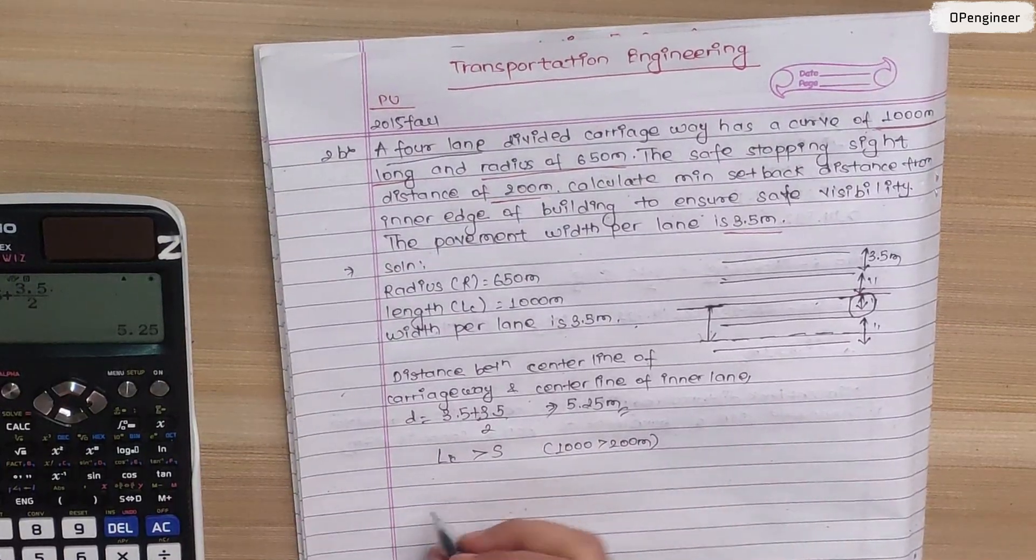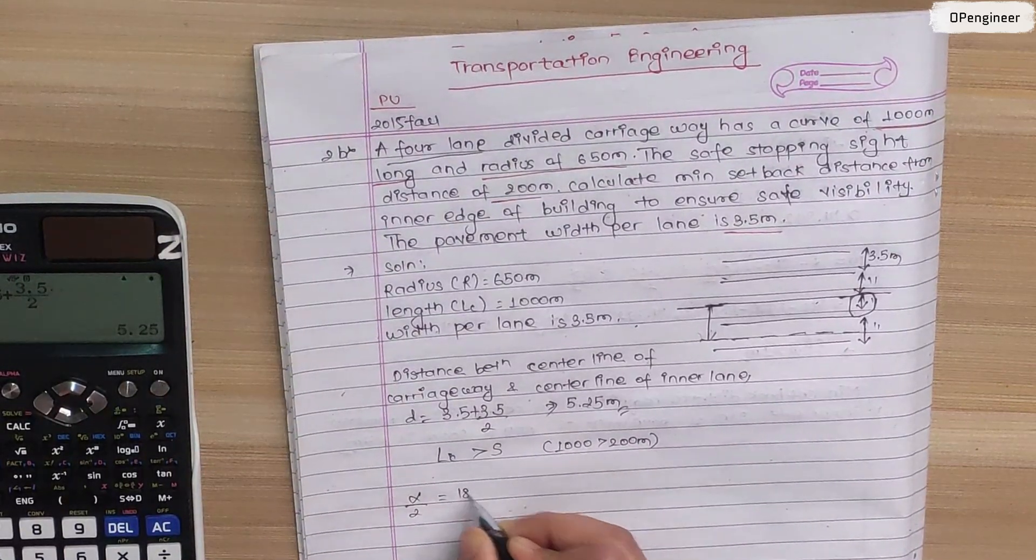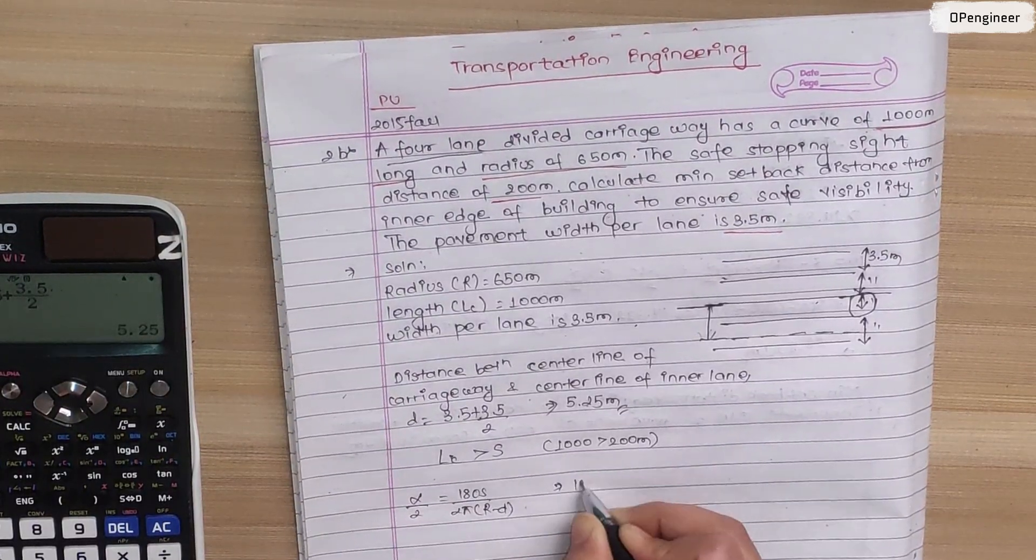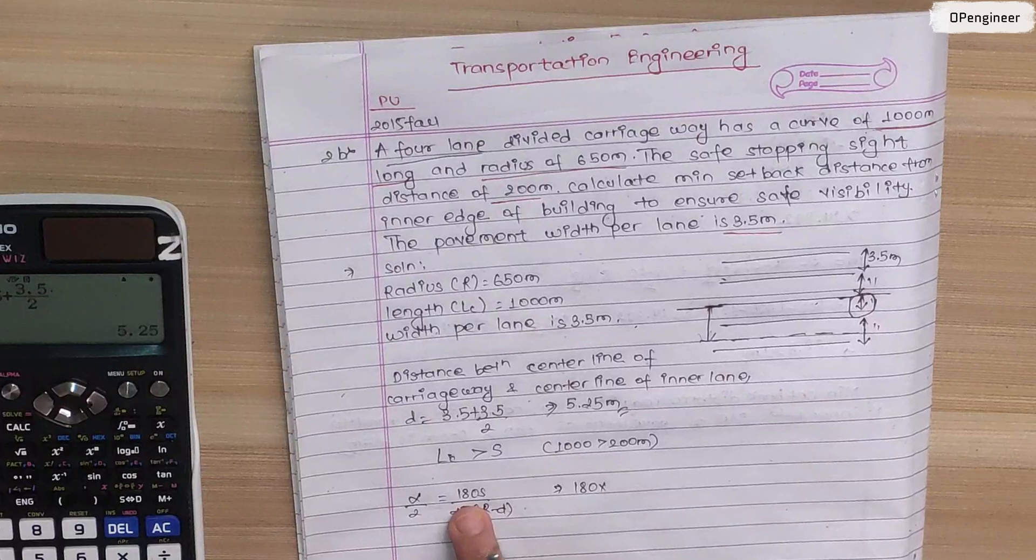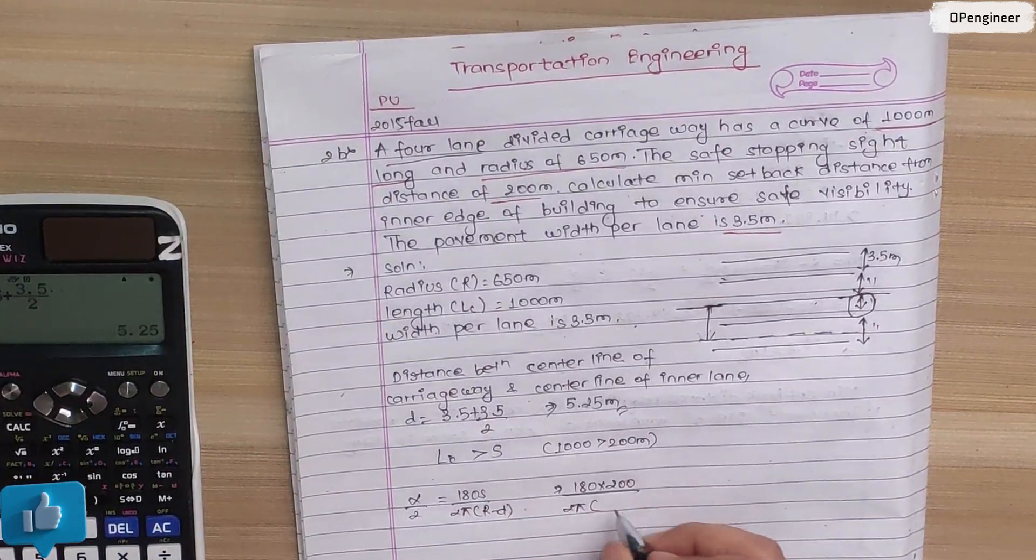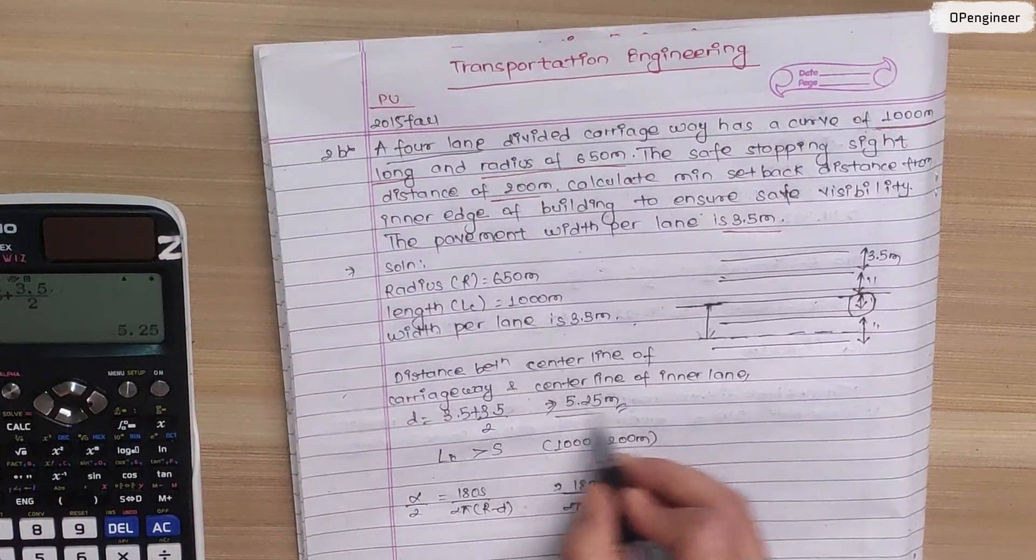Now we can calculate alpha by 2 using the formula: 180 S by 2 pi r minus d. So 180 into S, stopping distance is 200, divided by 2 pi radius 650 minus d which is 5.25.